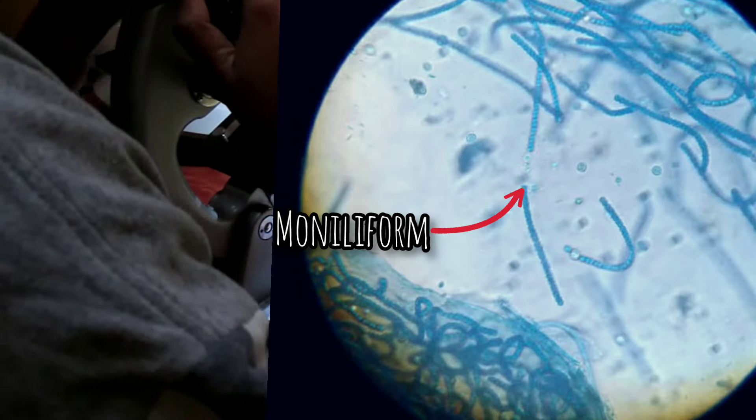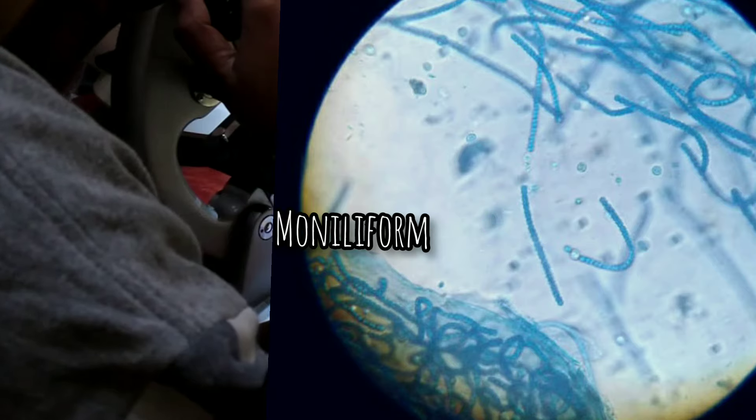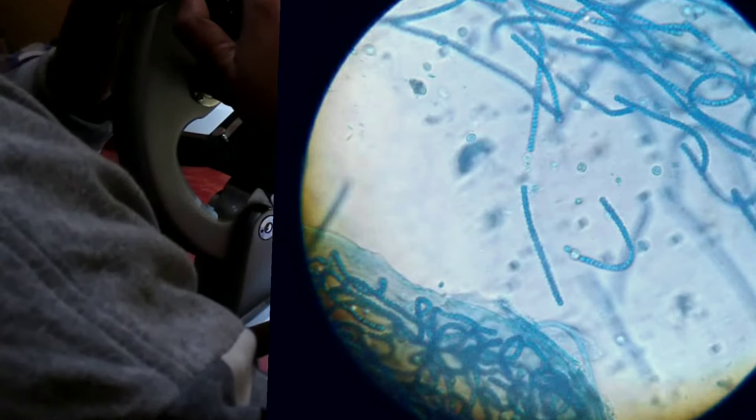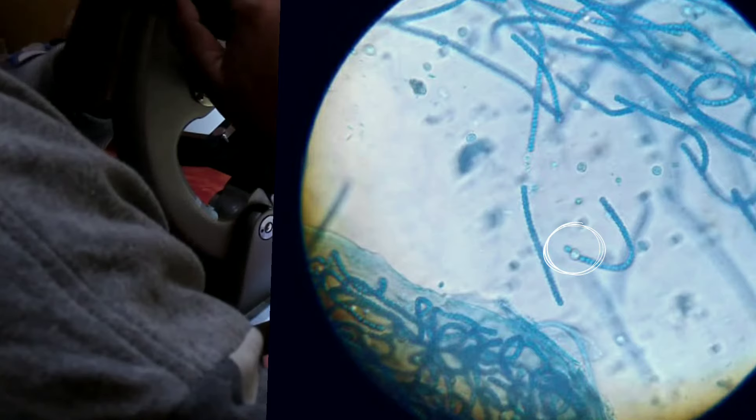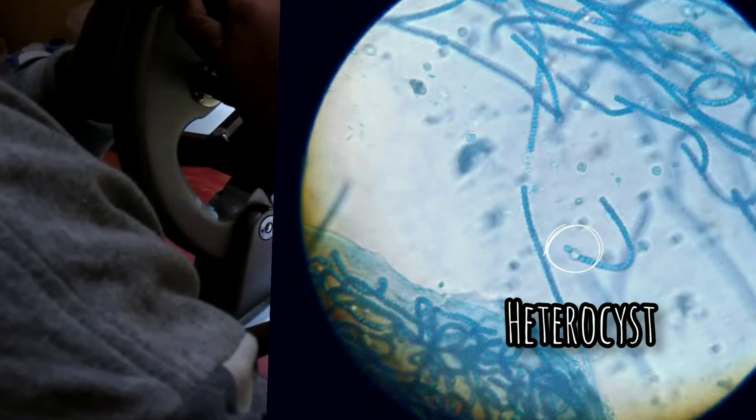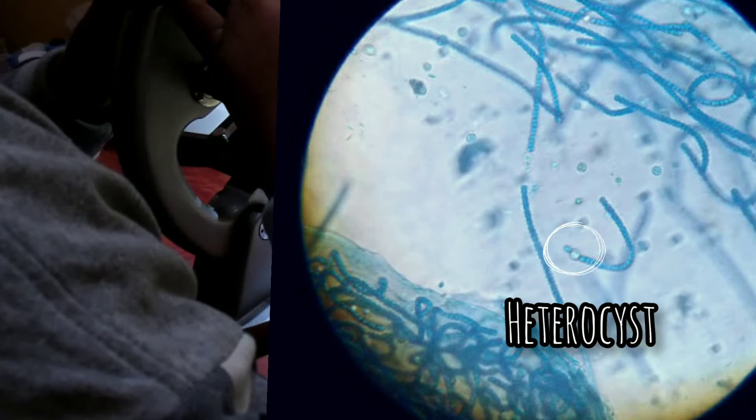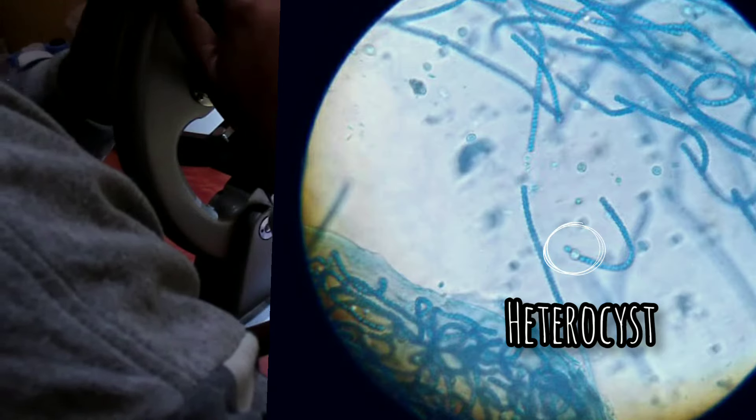In a filament, all the cells are not alike but at intervals are found slightly larger rounded and thick-walled cells having transparent contents. These are heterocysts. The heterocysts are commonly with two polar nodules and intercalary, but rarely with one polar nodule and terminal.